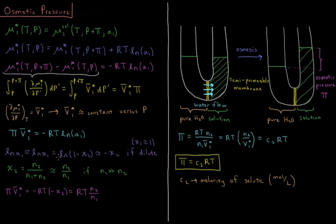The Taylor series for ln(1 − x) evaluated at x = 0 gives a first non-zero term of −x. So we get −χ₂ from this Taylor series when we're in a dilute solution where χ₂ is approximately zero.